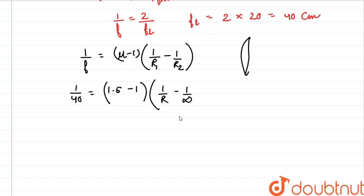1 by 40 is equal to 0.5 into, this becomes 0, 1 by r. So the value of r comes out to be simply half into 40, that is 20 centimeters.